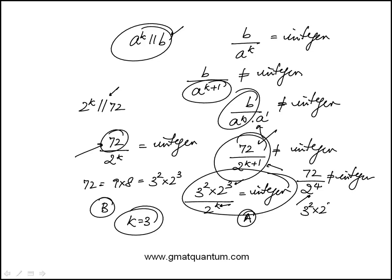That would be 3 squared times 2 to the 3rd. If k is 2, this would be 2 cubed, which is an integer. So here, that's why the answer is B, which is k is equal to 3.